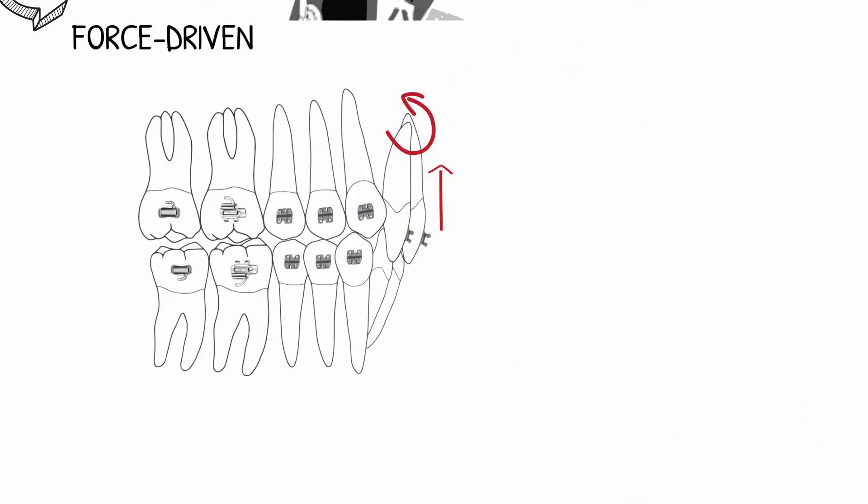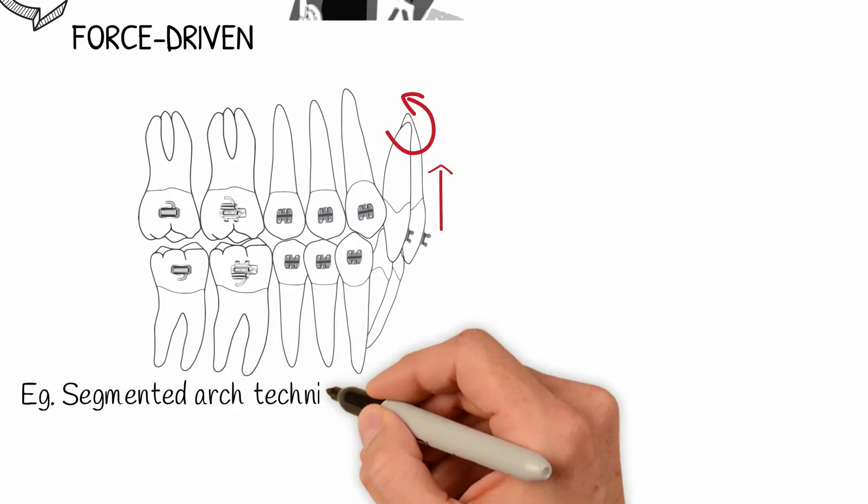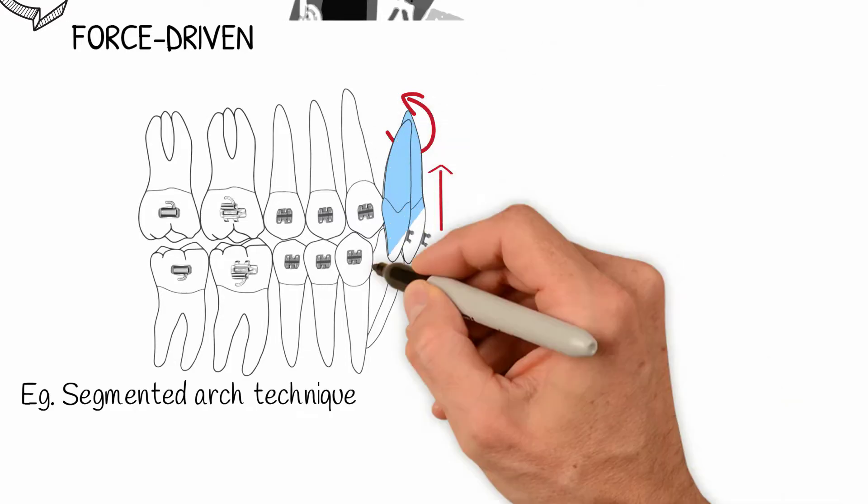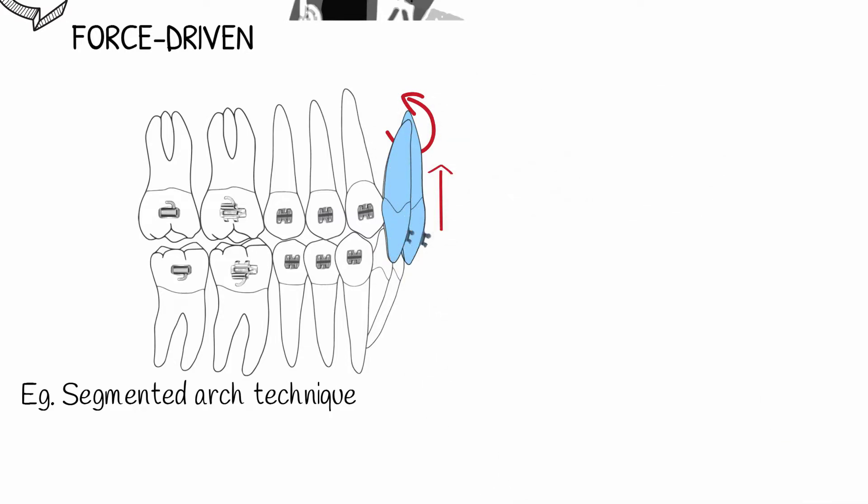As an example, we refer to the segmented arch technique, which segments the dental arch into an active unit represented by the teeth you want to move, and a reactive unit represented by the anchor teeth you do not want to move.